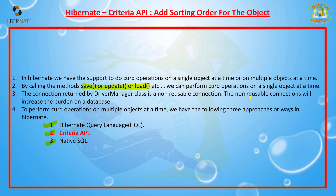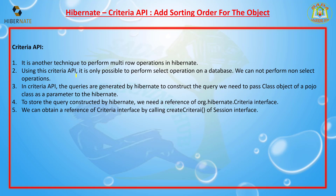The Criteria API is used to perform operations on multiple objects at a time. It is another technique to perform multi-row operations in Hibernate. Using the Criteria API, it is only possible to perform select operations — it is not possible to perform non-select operations. The queries are generated by Hibernate; to construct the query we need to pass the class object of a POJO class.